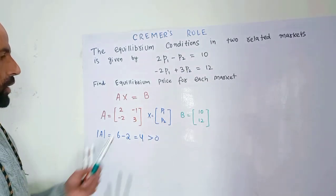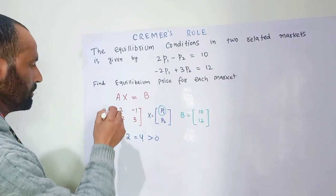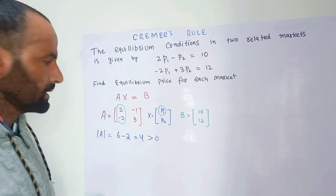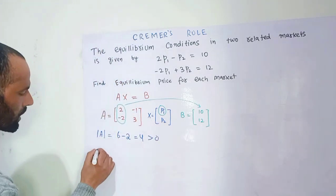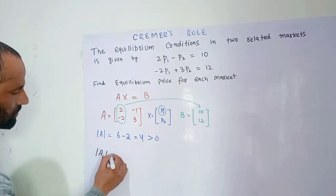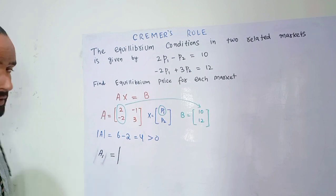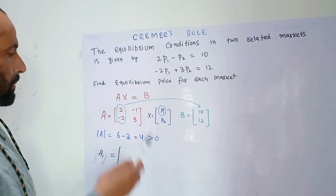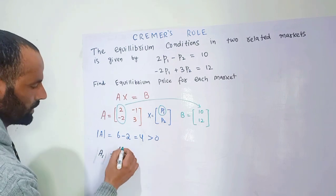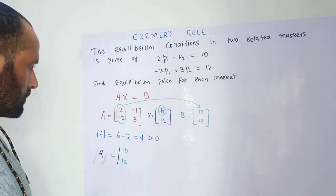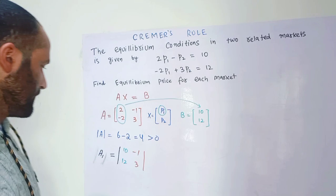The second step is to find the value of p1. To do this, we replace the first column of the coefficient matrix with the vector of constant terms and form a new matrix A1. So we replace the first column — the elements 2 and minus 2 — with 10 and 12, while the second column remains as minus 1 and 3.